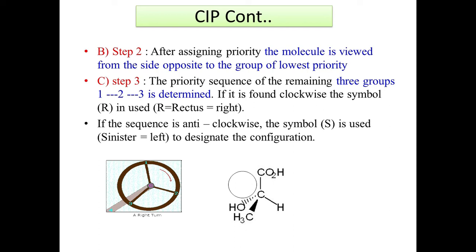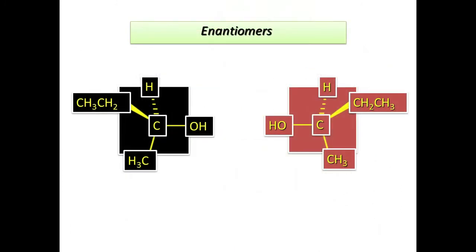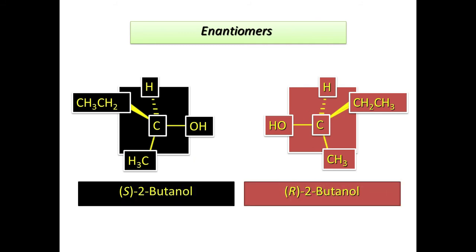Step 2 of CIP: after assigning priority, the molecule is viewed from the side opposite the lowest-priority group — like looking at a steering wheel. Step 3: if the sequence of the remaining three groups (1→2→3) is clockwise, the configuration is R (rectus); if anticlockwise, it is S (sinister). For a Fischer projection, the lowest priority group should be at the bottom. Clockwise order = R configuration; anticlockwise = S configuration.